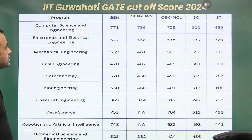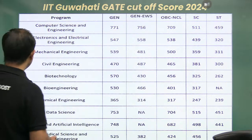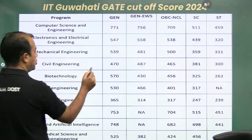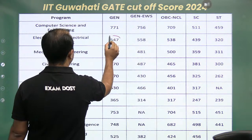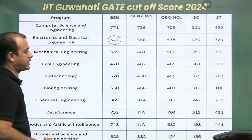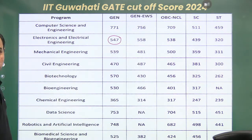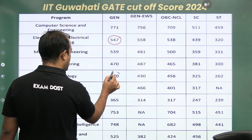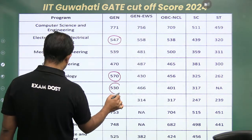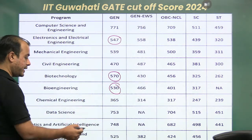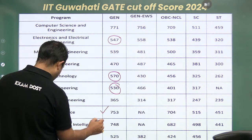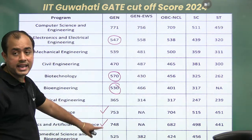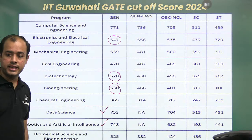The cutoff for Electrical and Electronics department is very low — it is 547. For Bioengineering, a similar cutoff is required, around 530 to 570. Data Science and Robotics and AI require a high GATE score, around 750.